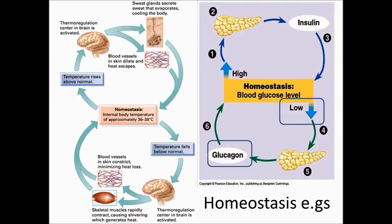When the brain detects the glucose level is too high, the pancreas releases insulin. This causes the liver and muscle cells to take in glucose and turn it into glycogen to reduce the blood sugar levels.